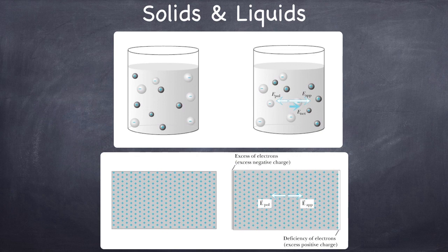In fact, the distribution will continue to shift until the internal field goes to zero, which means that the field produced by the polarization of the electron sea is going to be equal in magnitude but opposite in direction from the applied field, giving you a net field of zero. That's the idea.